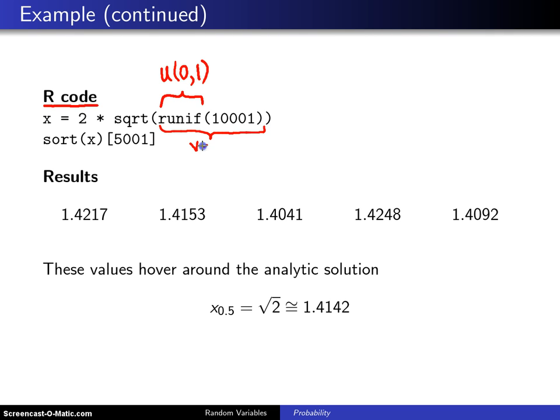What we have here now is a vector in R of 10,001 uniform 0, 1s. If you take the square root of each element and then double them, now you're going to have a vector x of 10,001 random variants from the distribution whose CDF was described on the previous slide.